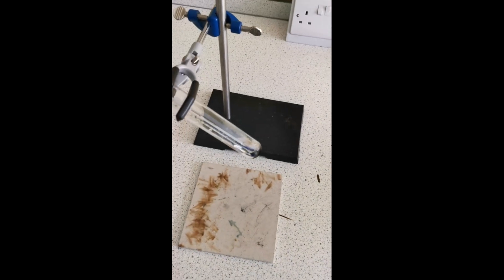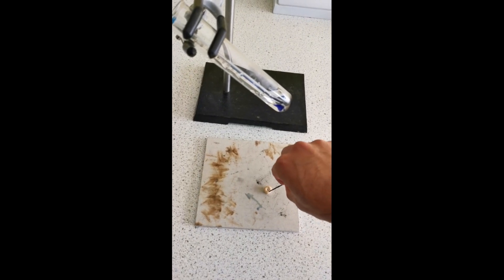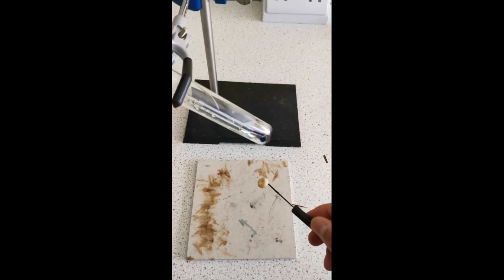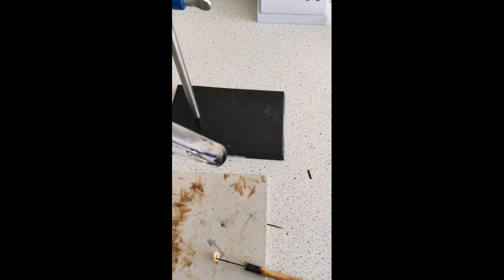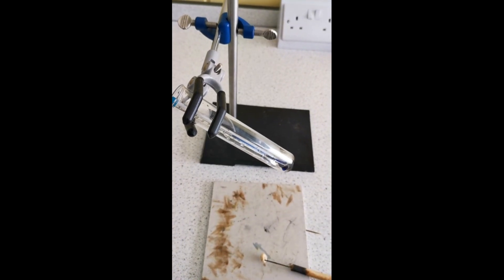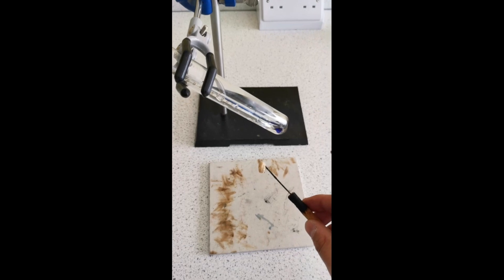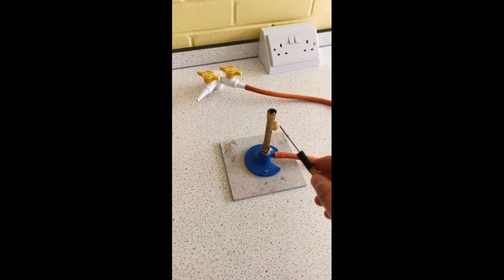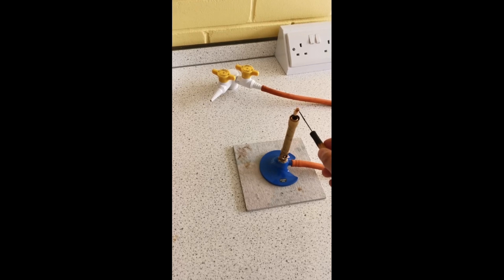Now we're ready to burn our first food sample. You want to get your food sample and push the mounting needle through it so it's firmly attached. Then you want to record the starting temperature. Don't forget to do this. Ours was 24 degrees Celsius. Now you want to set the food on fire using your Bunsen burner.